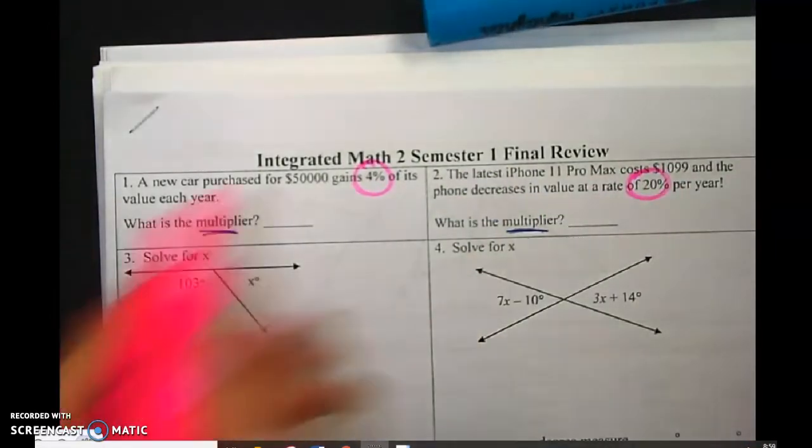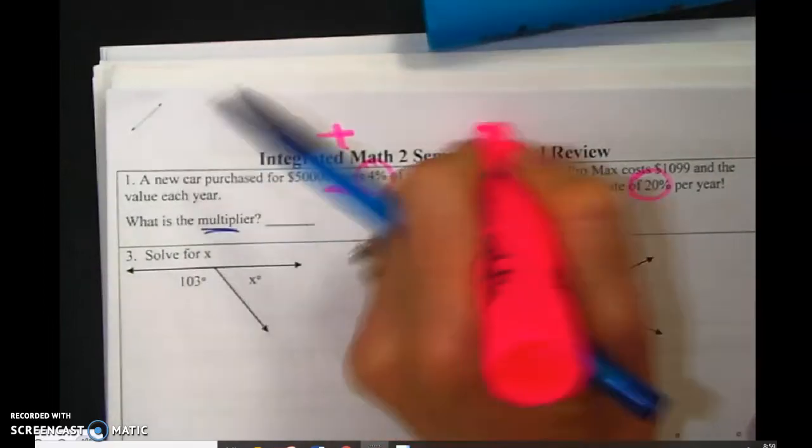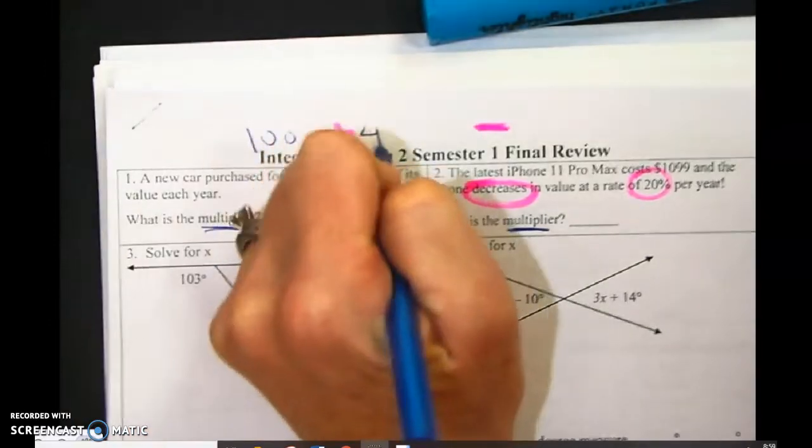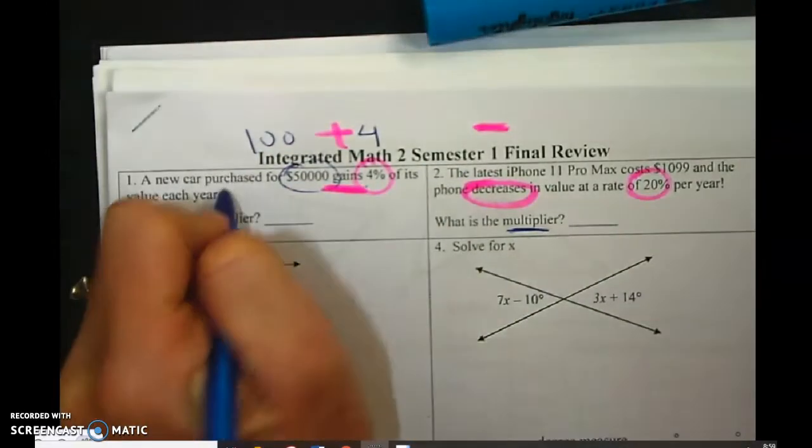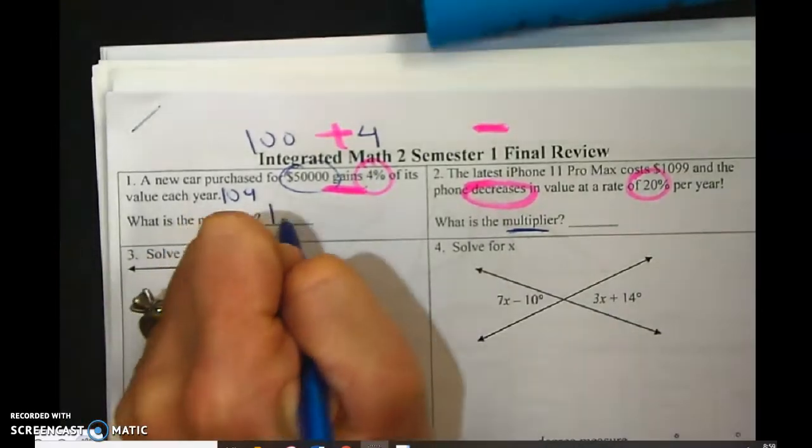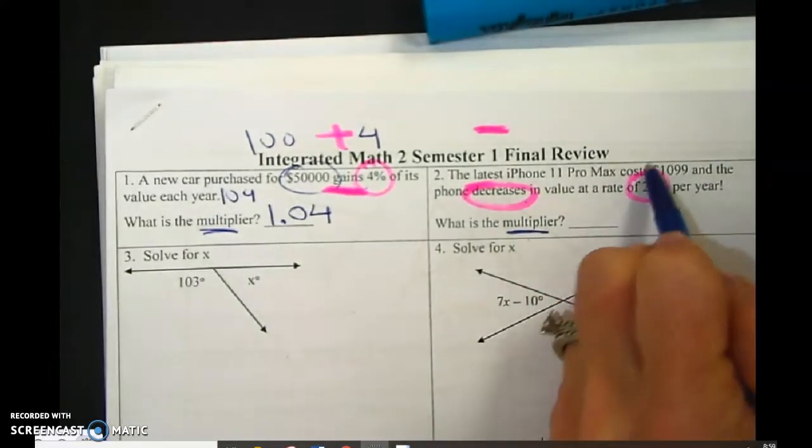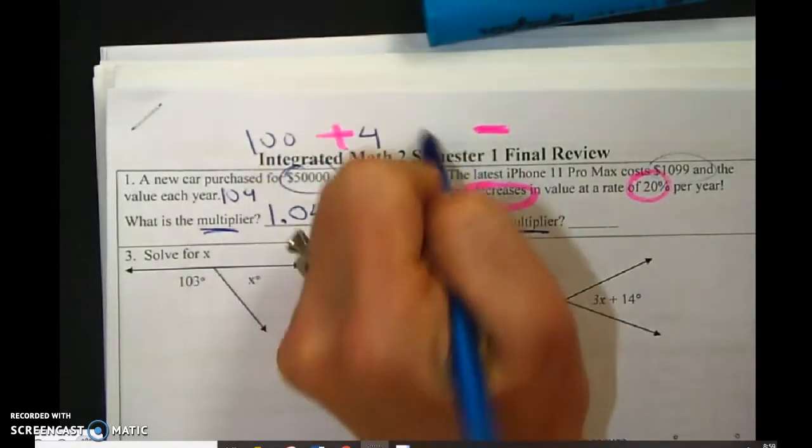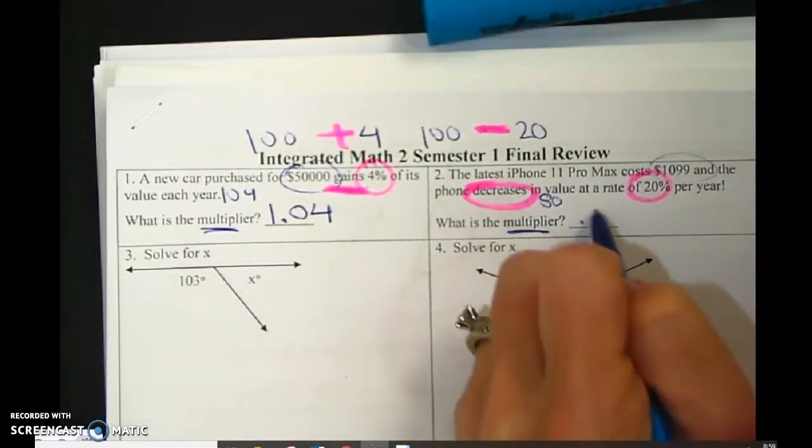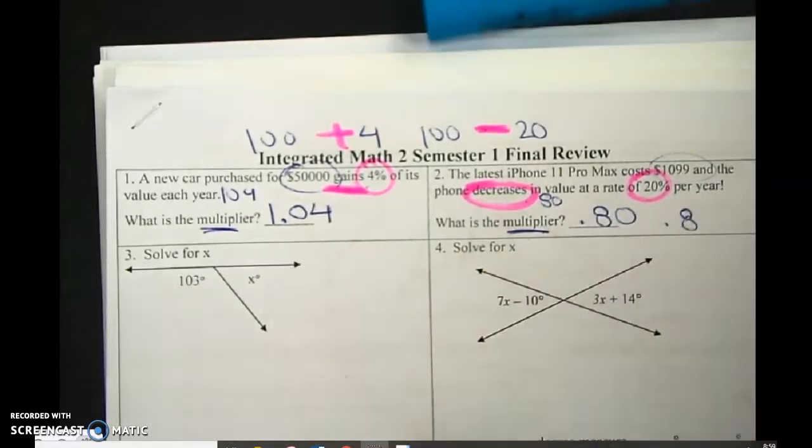But the difference is in this one, it says it gains. That means plus. This one decreases, which means minus. So you have 100% of your money and you add 4% to it. That's 104%, but you need to write it as a decimal, 1.04. This one decreases 20%, so you're not going to pay as much. You're going to have 100 minus 20%, which is 80%, which is 0.80 or 0.8.